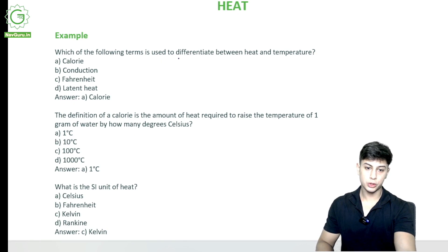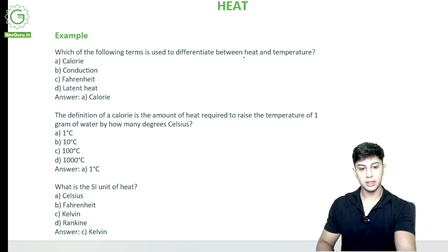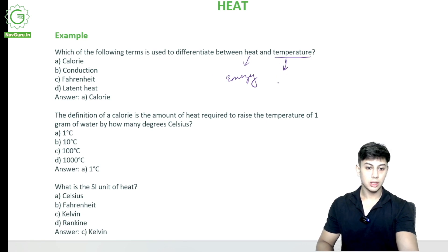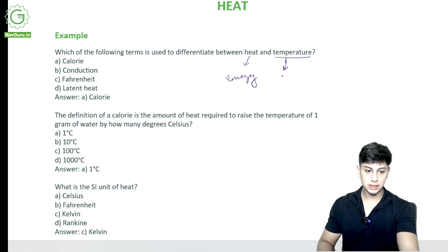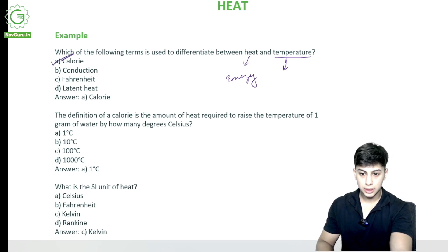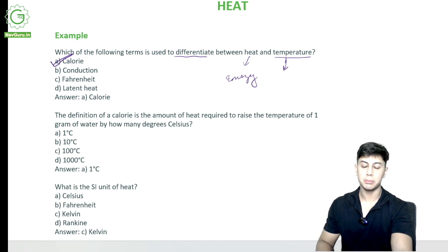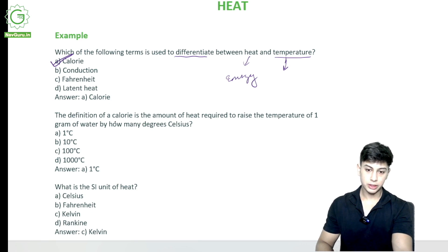Heat was energy, and temperature was how we calculated heat — how much it is rising, how much it is falling. The answer is calorie. This is how we differentiate between heat and temperature.